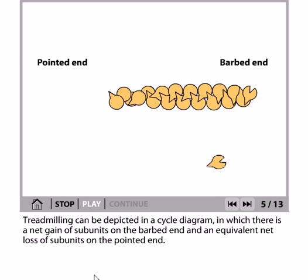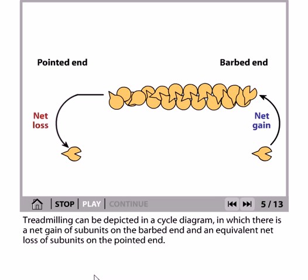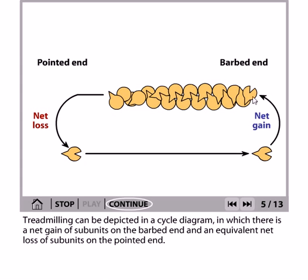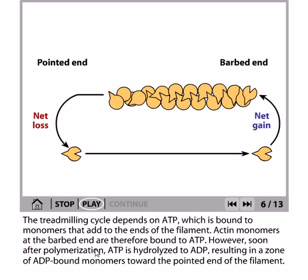Treadmilling can be depicted in a cycle diagram in which there is a net gain of subunits at the barbed end and an equivalent net loss of subunits at the pointed end. The subunits lost at the pointed end are added at the barbed end, producing a positive net effect at the barbed end.